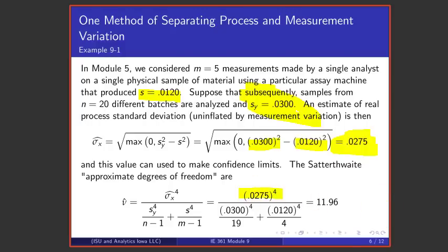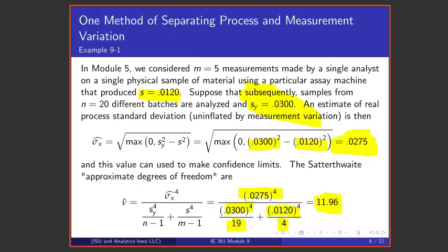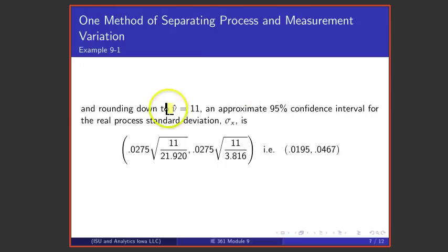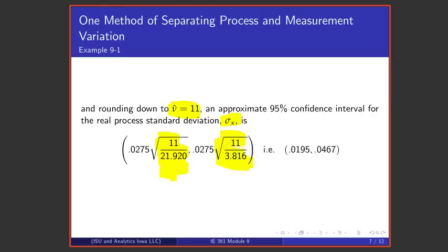To make confidence limits, we need the Satterthwaite approximate degrees of freedom. Taking .0275 raised to the fourth power in the numerator, with the two standard deviations raised to the fourth power in the denominator, and divisors equal to the degrees of freedom (sample sizes minus one), the ratio turns out to be 11.96. Following our rule of rounding down, we use 11 degrees of freedom. We then make approximate 95% confidence limits for the process standard deviation by taking .0275 and hedging it by factors equal to the square root of 11 over chi-square 11 percentage points — the upper and lower 2.5% points — yielding approximate 95% limits.